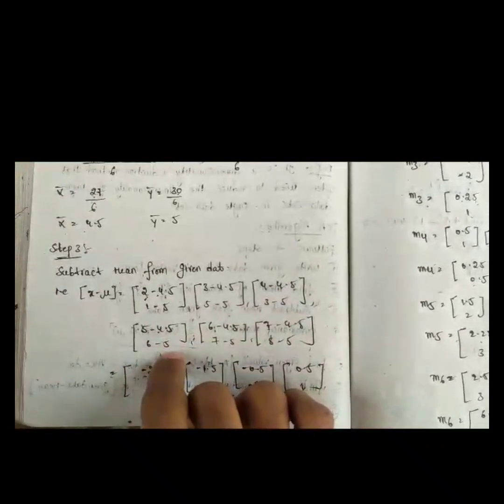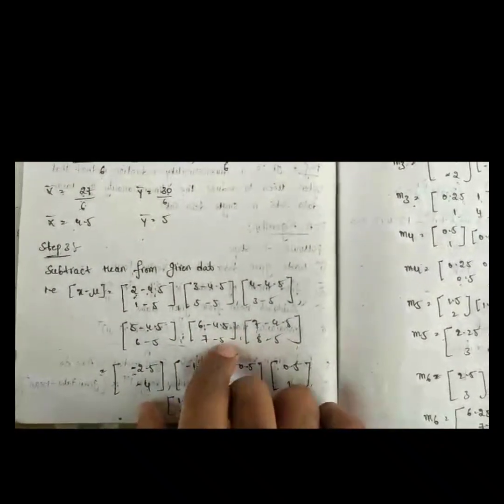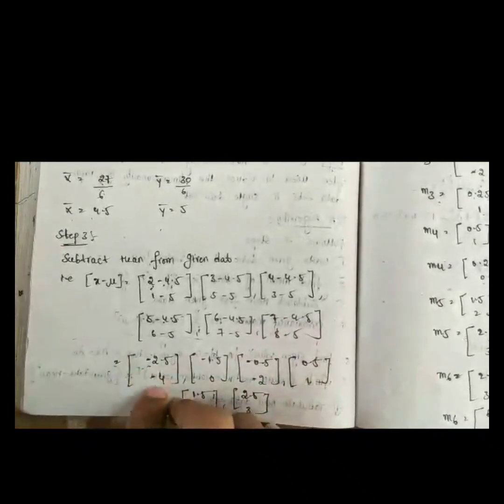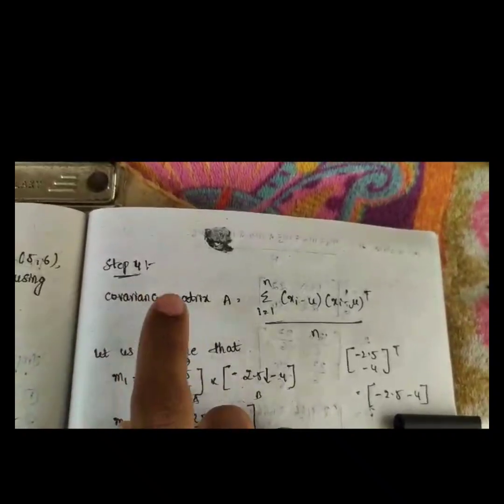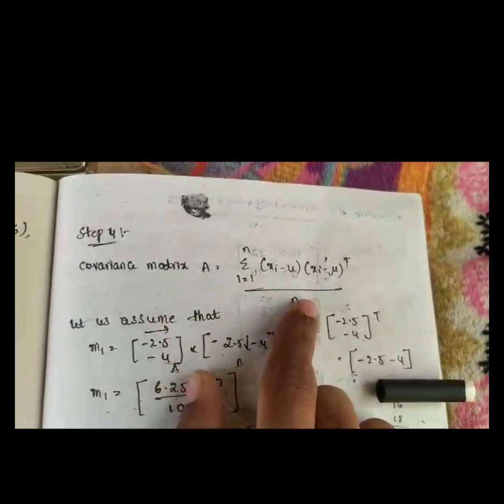y-bar equals 5. The third step is to subtract the mean from the given data. We compute: (2 − 4.5), (3 − 4.5), (4 − 4.5), (5 − 4.5), (6 − 4.5), (7 − 4.5) for x, and similarly for y subtracting 5. We get the centered values: −2.5, −1.5, −0.5, 0.5, 1.5, 2.5 for x, and −4, −2, −1, 1, 2, 3 for y.